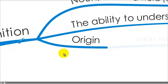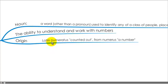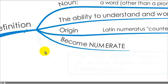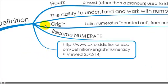The origin of the word is from Latin numeratus which means counted out, which comes from the word numerous, which is a number. And when we have numeracy skills we become numerate. So you are a numerate. And the source for this was the Oxford Dictionaries which is listed here, the website.